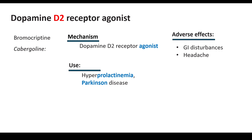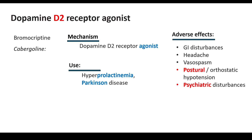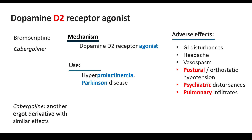There are three P's to remember with respect to the adverse effects of bromocriptine: it can cause postural (orthostatic) hypotension, psychiatric disturbances, and pulmonary infiltrates at higher doses.